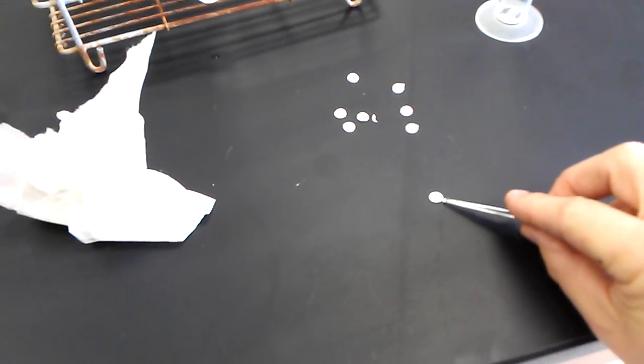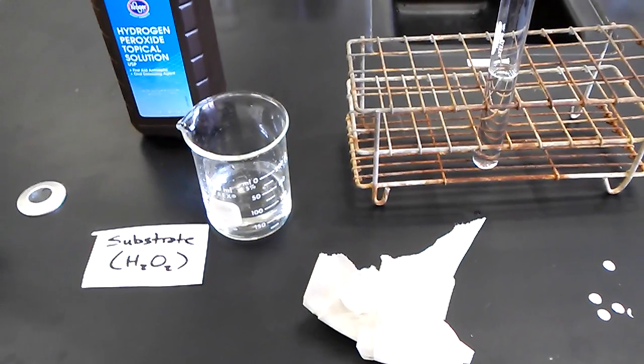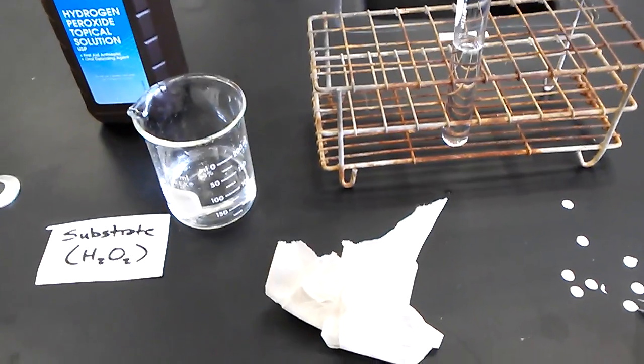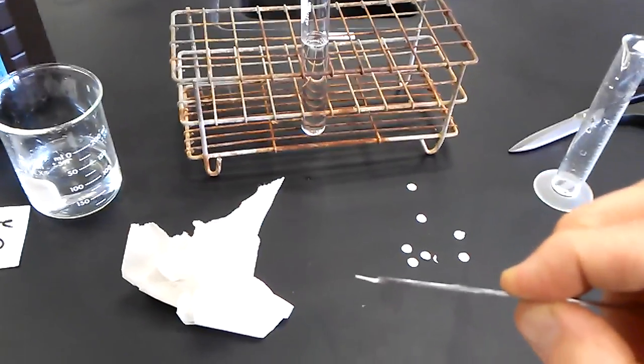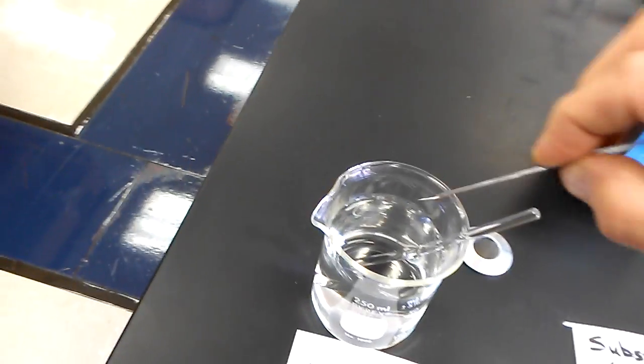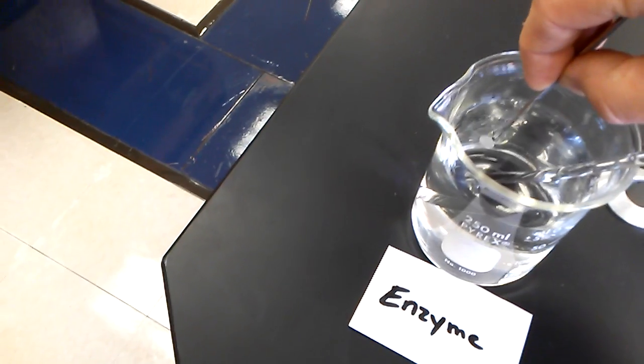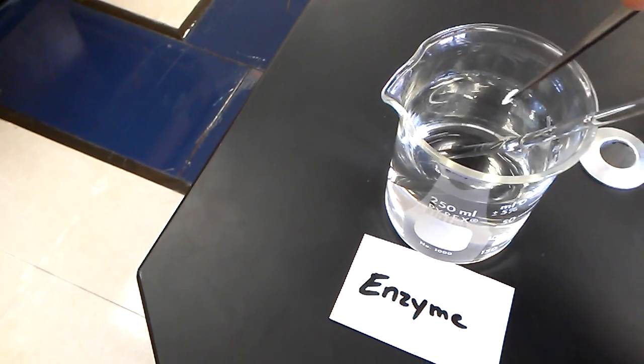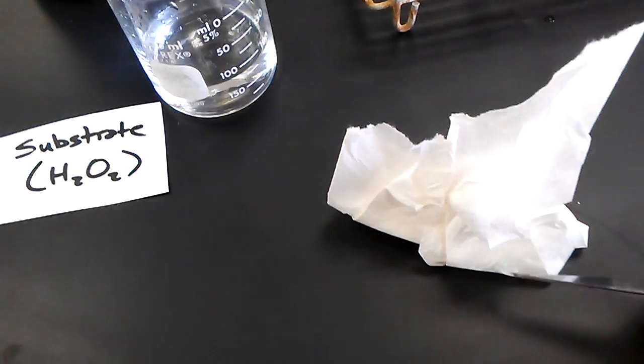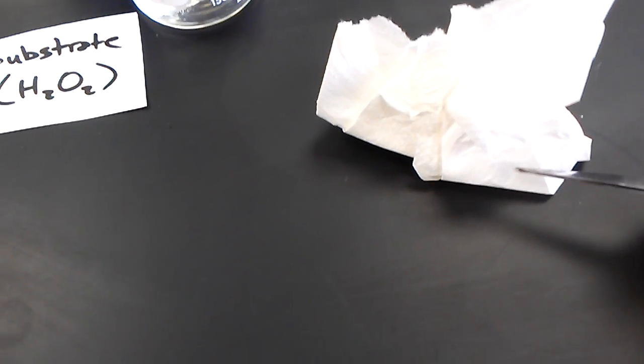Now, we will obtain a filter disk. These have just simply been punched with a hole punch. And we will then soak these in our catalase solution for a moment. And then we will touch these to a piece of dry paper towel simply to absorb any of the excess off. That will give us a consistent result each time.